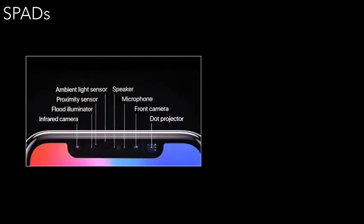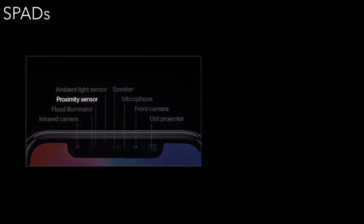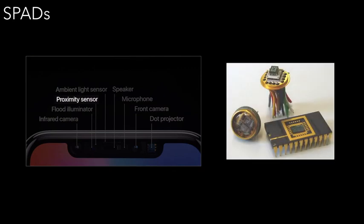However, modern RGB cameras often ship alongside sensors that capture some 3D information. For example, the iPhone X includes a proximity sensor, which uses a pulsed laser and a single photon avalanche diode, or SPAD, to estimate the depth of a single point in front of the sensor.